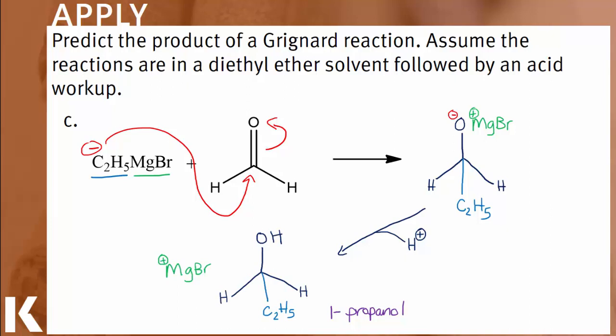Again, let's double check to make sure we account for the addition. Two carbons in the Grignard reagent plus one carbon in the formaldehyde gives us a three-carbon product, which is propanol.